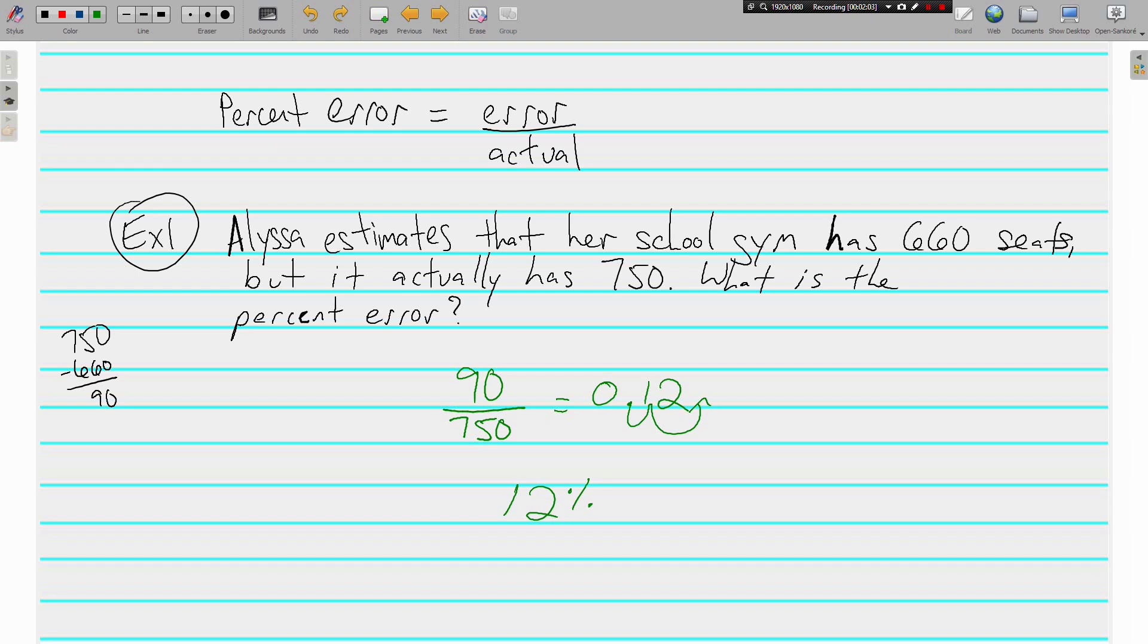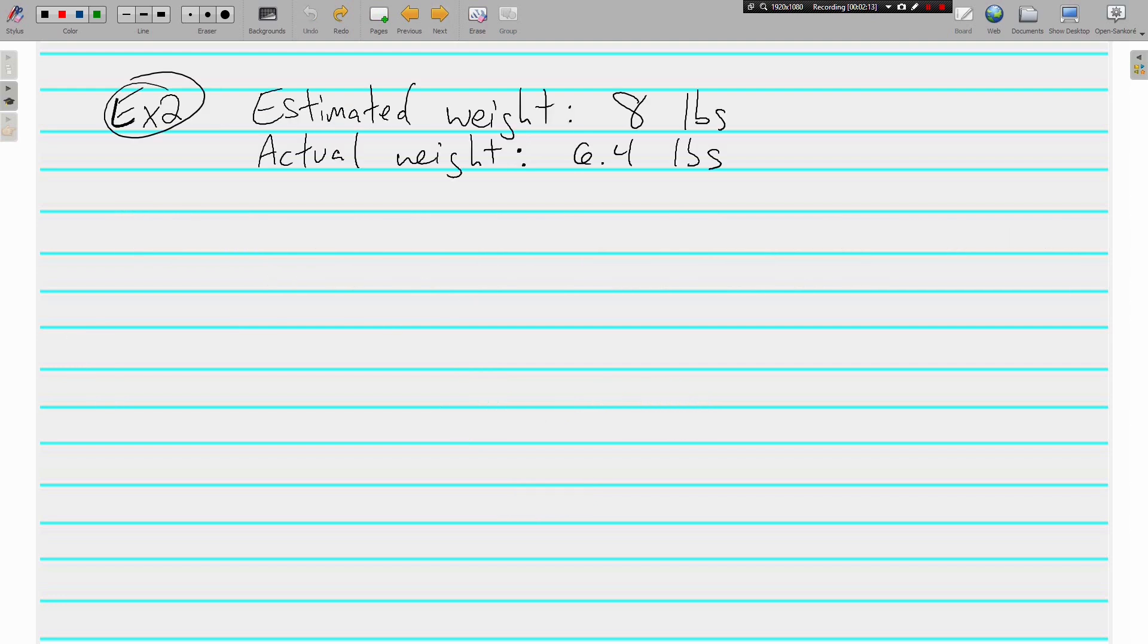Her guess, subtracted from the actual, divided by the actual. Let's look at another. Looks like somebody was guessing how much something weighed. The estimated weight was 8 pounds. The actual weight of it was 6.4 pounds. So what were we off by? The error was 8 minus 6.4, which is 1.6.